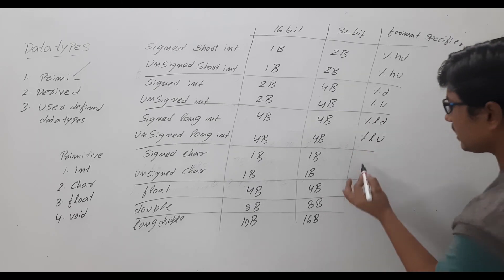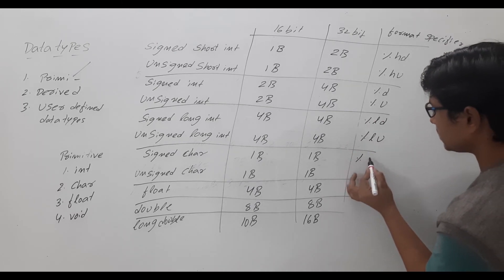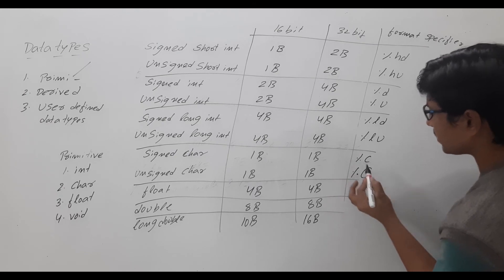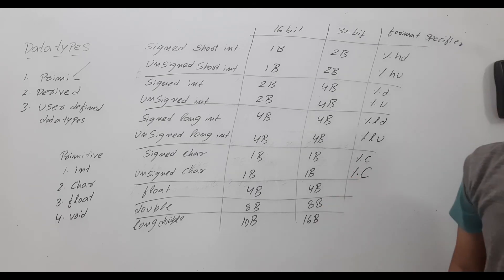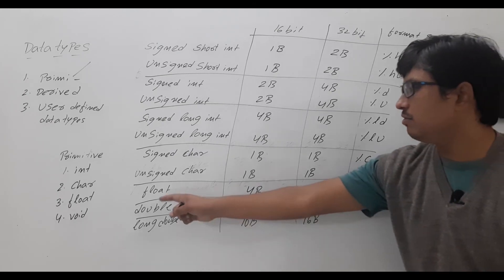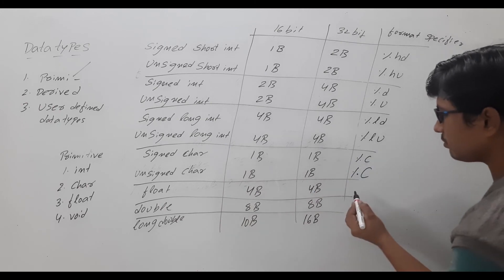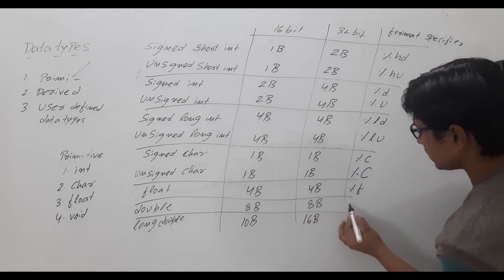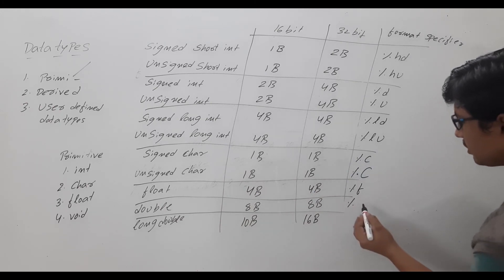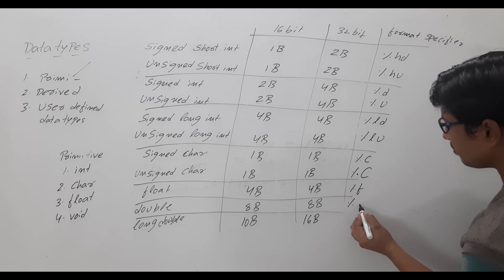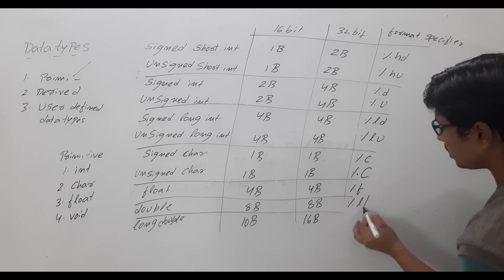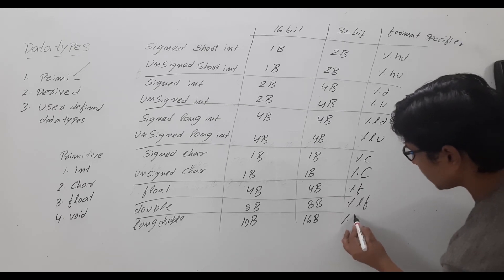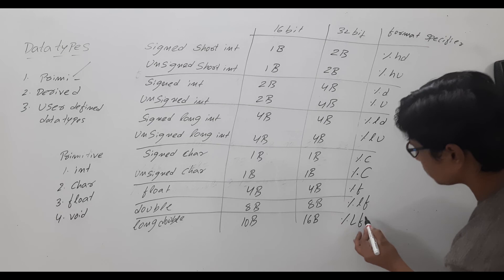For signed char the format specifier is %c (small c), and for unsigned char it is %C (capital C). For float it is %f, for double it is %lf (small l, small f), and for long double it is %Lf (capital L, small f).